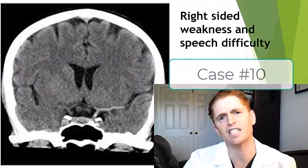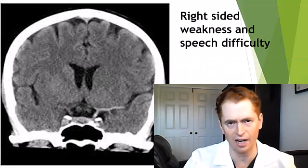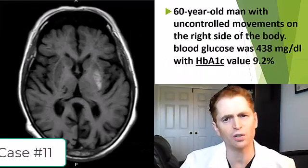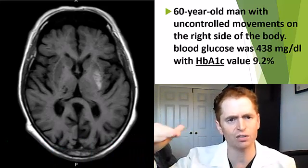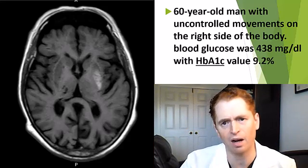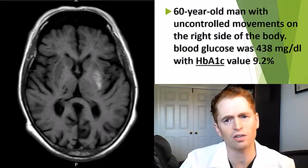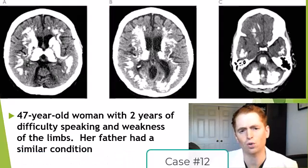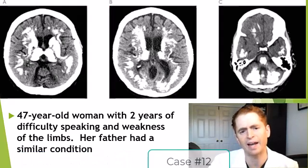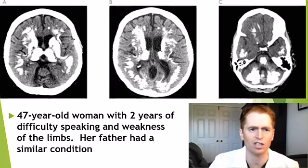Right-sided weakness and speech difficulty — this is a coronal image of a CAT scan; no contrast dye was given. We have a 60-year-old man with uncontrolled movements on the right side of the body. This is an axial T1 MRI with no gadolinium contrast. Of note, blood glucose was 438 and hemoglobin A1C was elevated at 9.2%. A 47-year-old woman with two years of difficulty speaking and weakness of the limbs — of note, her father had a similar condition. These are axial images of a CAT scan without contrast.